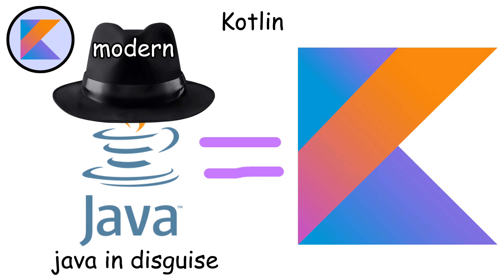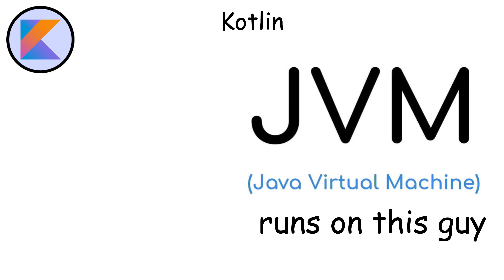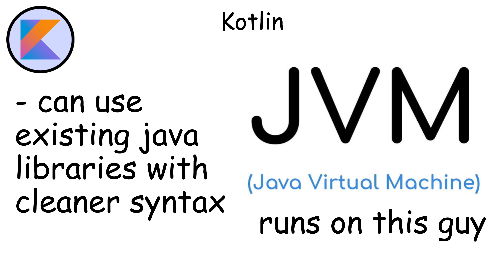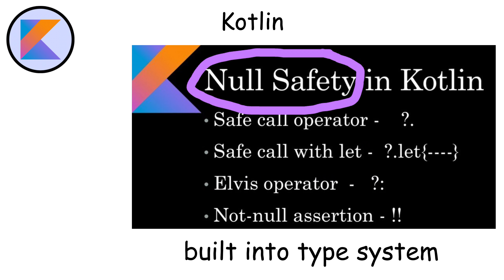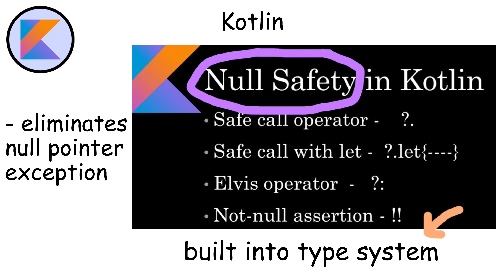What makes Kotlin special is that it's essentially a modernized Java. It runs on the Java Virtual Machine and can use all existing Java libraries, but with much cleaner syntax. Kotlin has null safety built into the type system, which eliminates the dreaded null pointer exception that plagues Java developers.